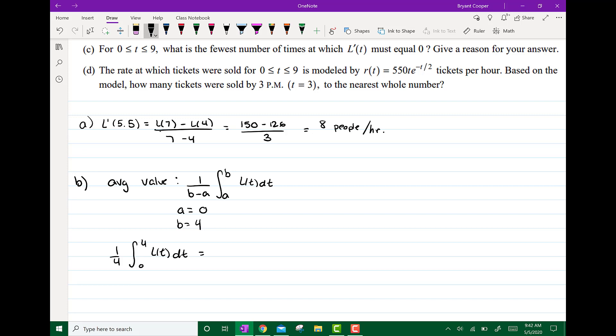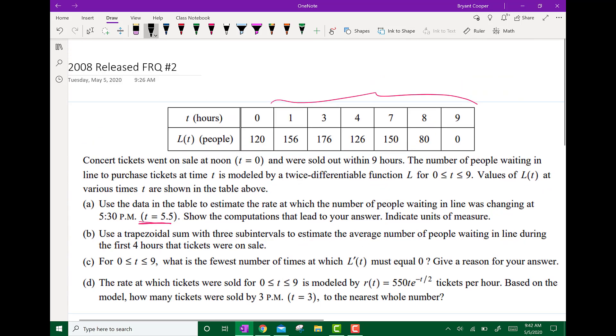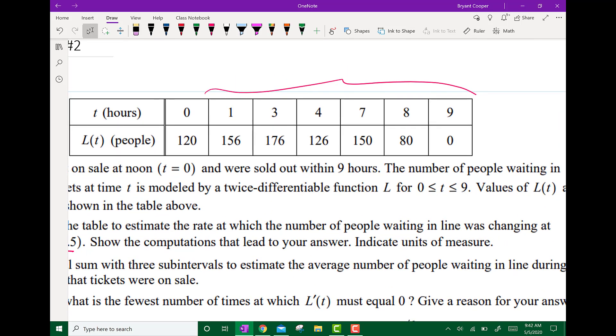And when we're using our trapezoid sum we want to make it into intervals. So we're going from 0 to 4. So it's going to go from here to here. So our first interval is going to be 0 to 1. Our second interval is going to be 1 to 3. The next one is going to be 3 to 4. Three subintervals not 4. Three subintervals.